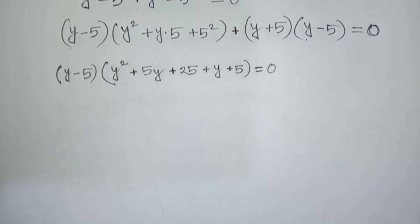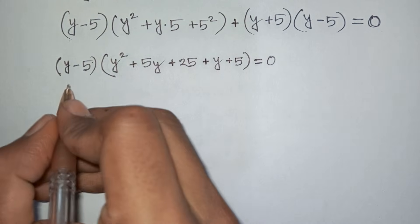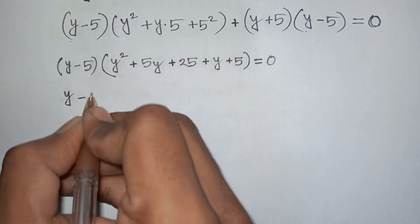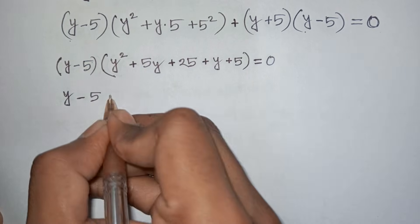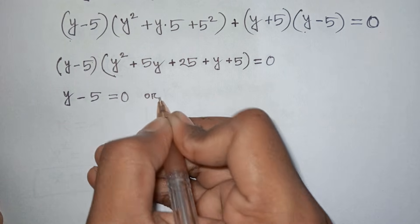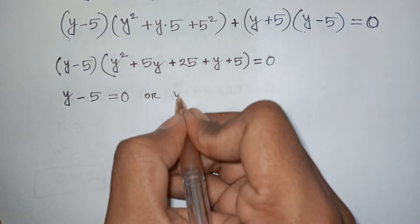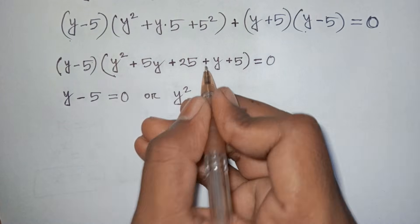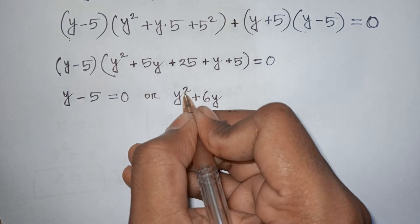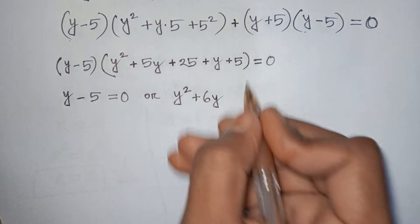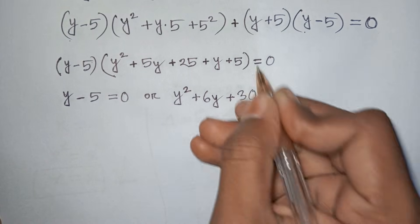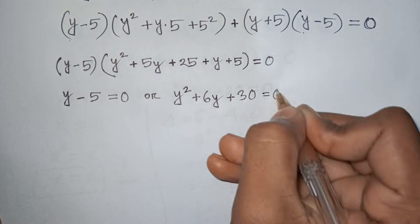In the next step, we can write y - 5 = 0, or y² + 5y + y + 25 + 5 = 0, that means y² + 6y + 30 = 0.